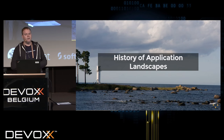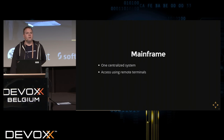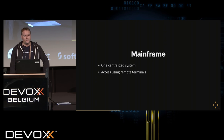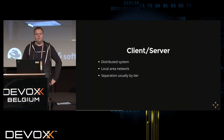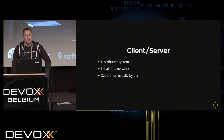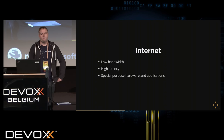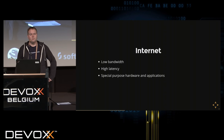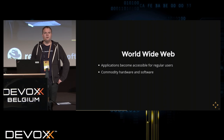A short history of application landscapes: first there was the mainframe, where you logged in to the application itself using remote access terminals. Then came distributed client-server systems on a local area network. Then came the Internet — initially low bandwidth with high latency, requiring special hardware like a modem, making it essentially a remote terminal. That changed with the World Wide Web, when applications became accessible to regular end users via a web browser.